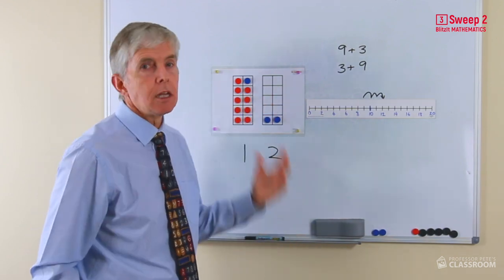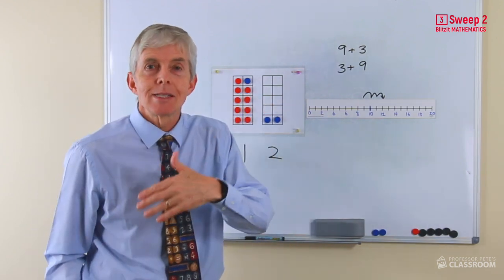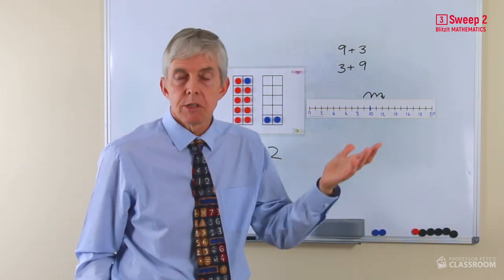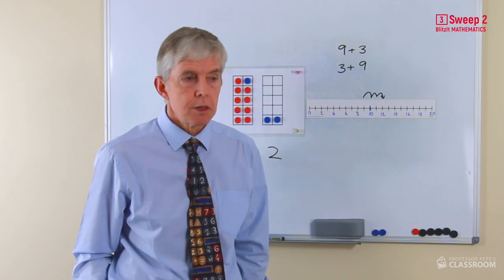Because if you have 10, and then you add another number, that's a simple place value question. 10 plus three, well, that's 13, because that's how we structure 13. Okay, so that's it for this sweep.